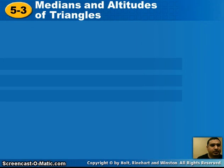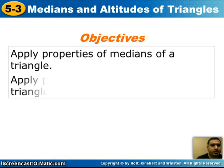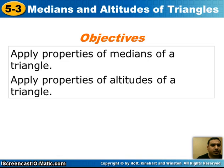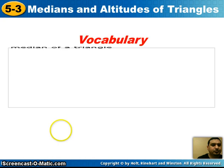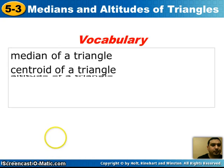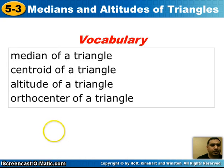Today we're going to talk about medians and altitudes of a triangle. Objectives for today are to apply properties of medians of a triangle and apply properties of altitudes of a triangle. Key vocabulary words: median, centroid, altitude, and orthocenter of a triangle.